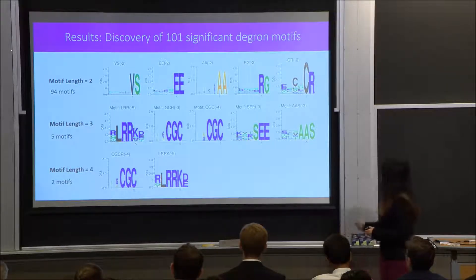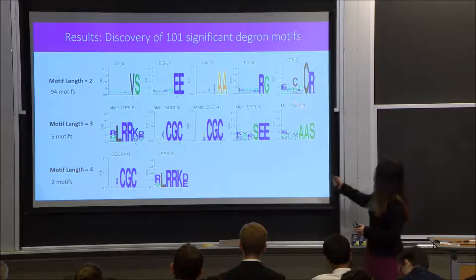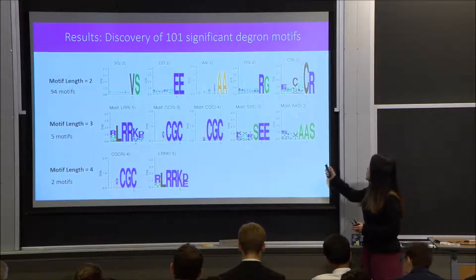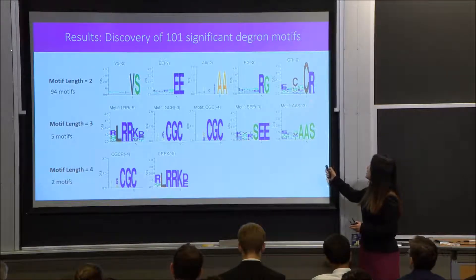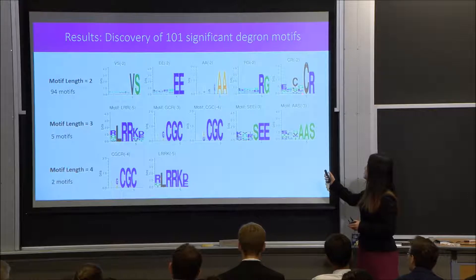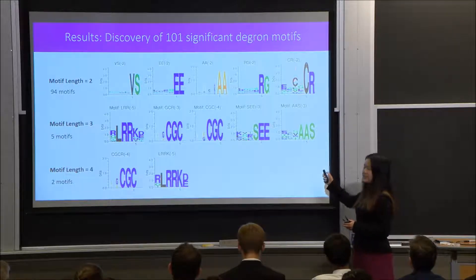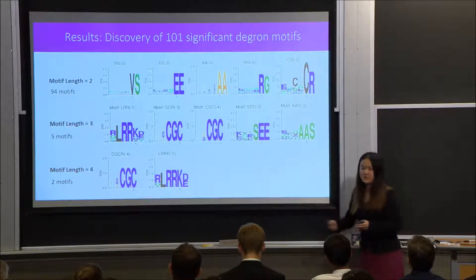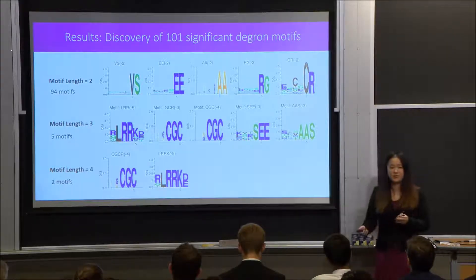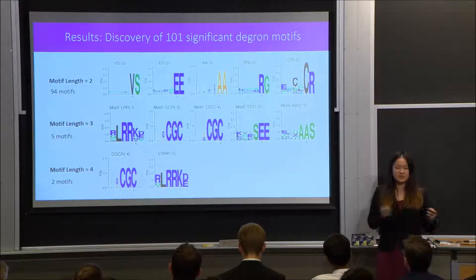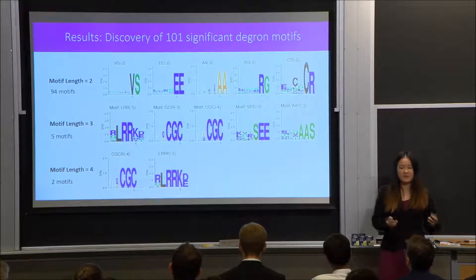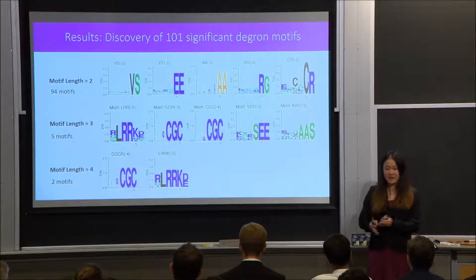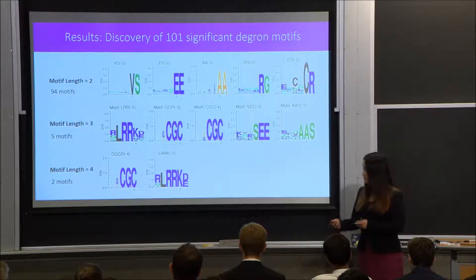For example, looking at the CR-2 motif shown here, we can see that not only is there a CR pattern at the very end, but there is actually an enriched C amino acid at the third position. So future research could look into the existence of a potential C-gap-CR motif.